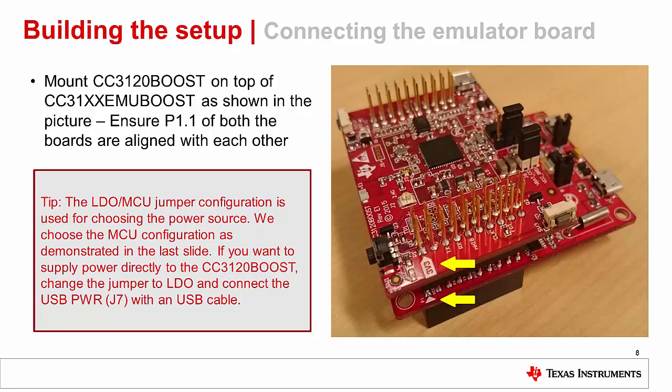As a tip, the LDO/MCU jumper configuration is used for choosing the power source. We chose the MCU configuration as demonstrated. If you want to supply power directly to the CC3120 booster pack, change the jumper to the LDO and connect to the USB power or J7 with another USB cable.